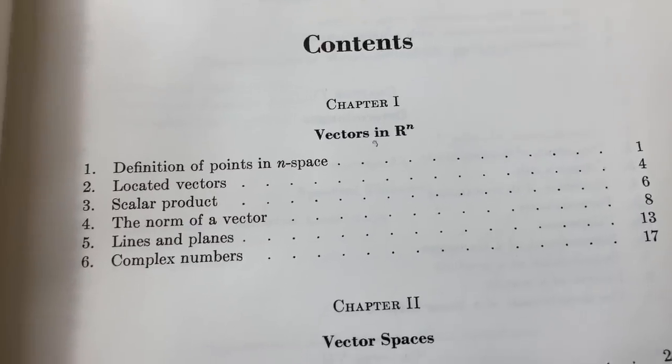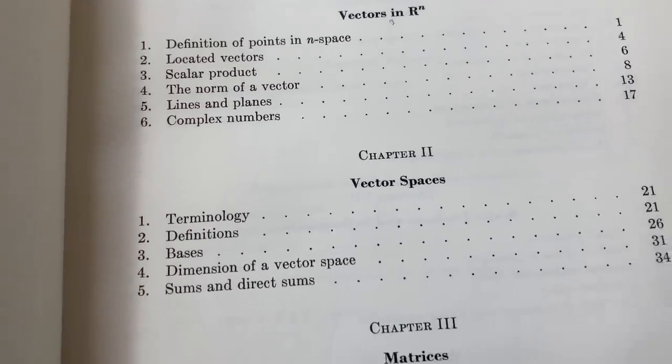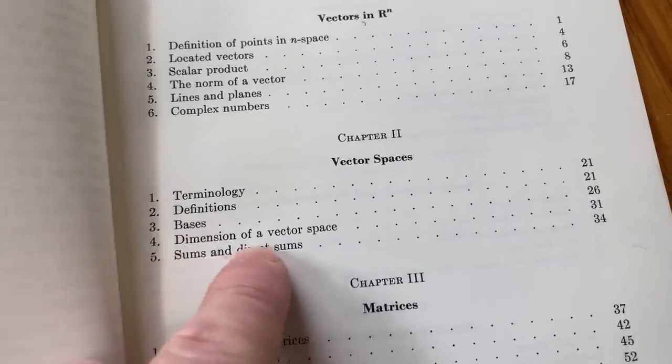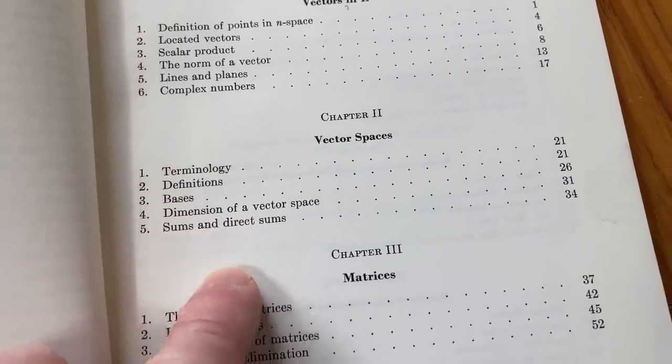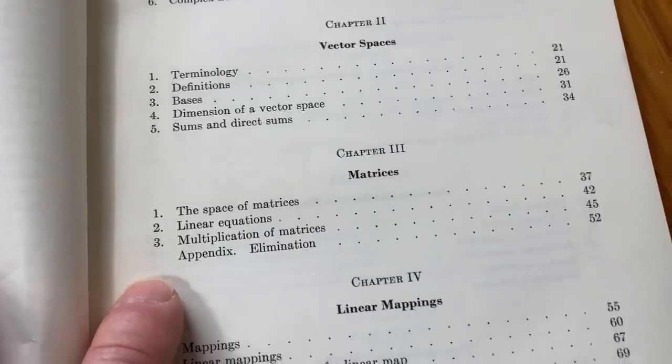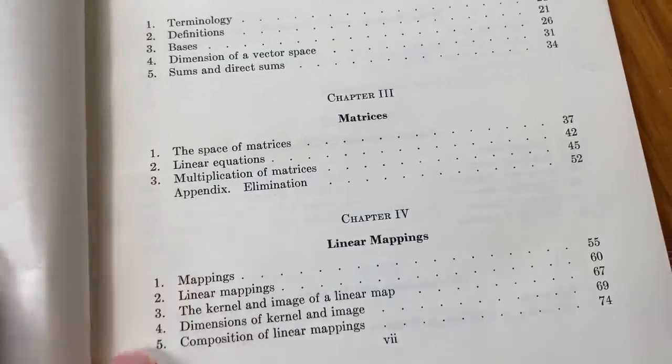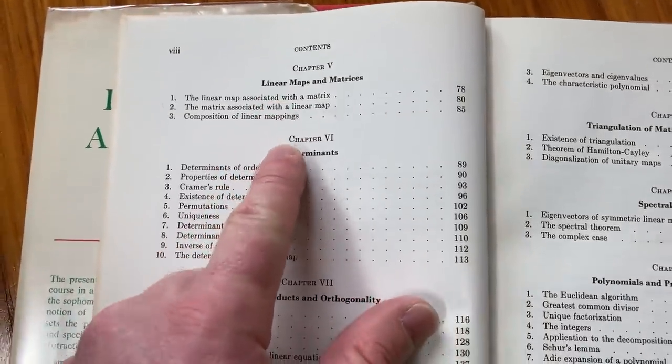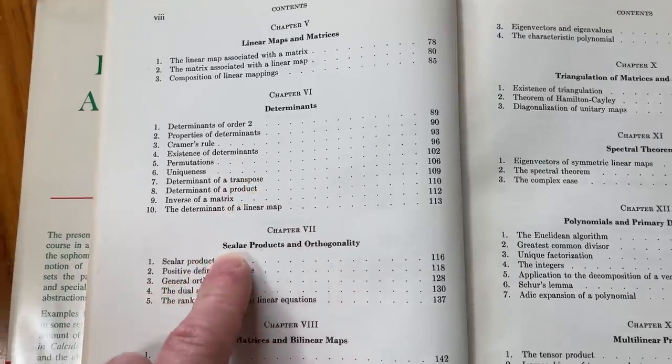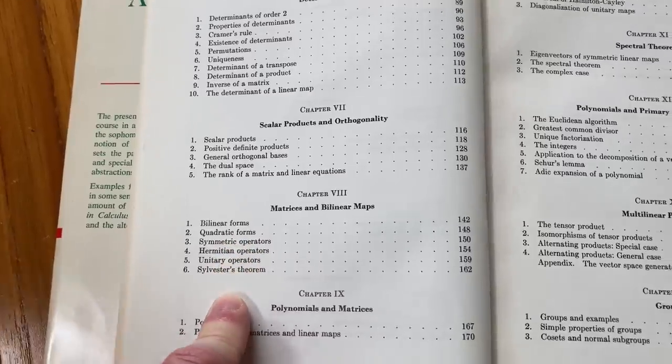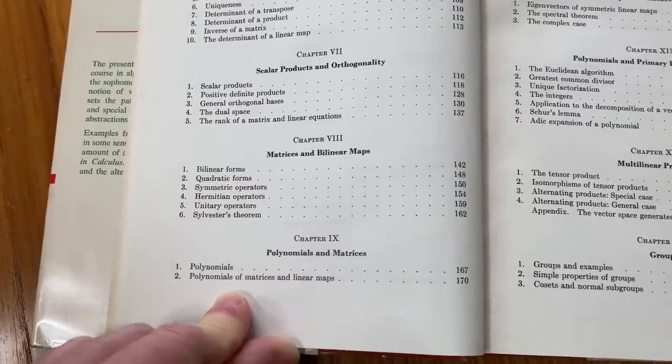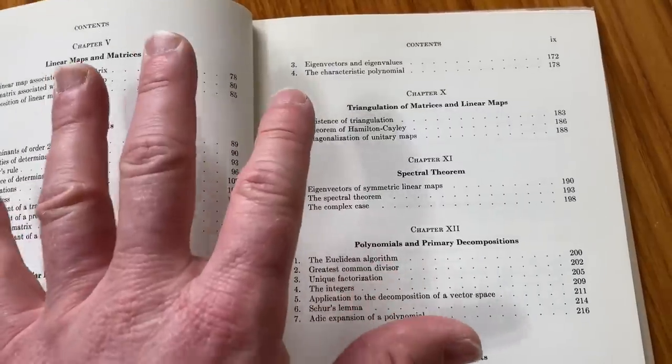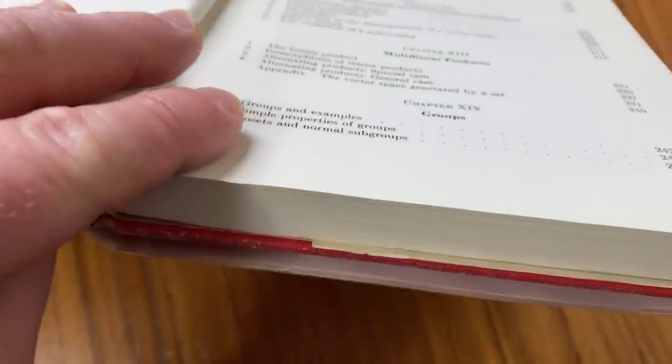It starts with vectors in R^n, and then it goes on to vector spaces. And it really goes through it pretty quickly. You have definitions, talks about bases, dimension of vector space, and then sums and direct sums. Then it jumps to matrices, and then it goes into linear mappings, which are super important in linear algebra. Let's keep looking at the table of contents. Linear maps and matrices, determinants, all kinds of stuff here. Scalar products and orthogonality, matrices and bilinear maps, polynomials and matrices. There's a lot of topics in this book that you won't find in other books. So it's a pretty dense book, despite how thick it is.